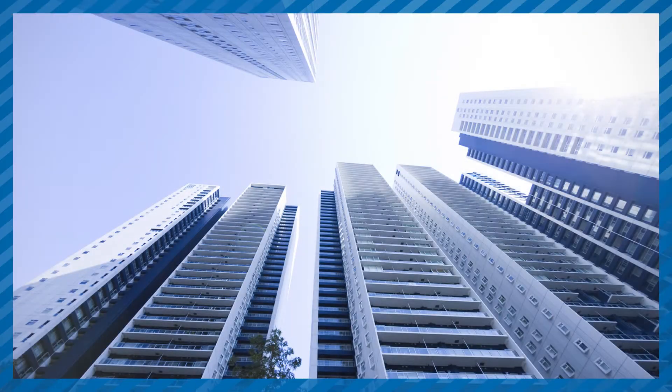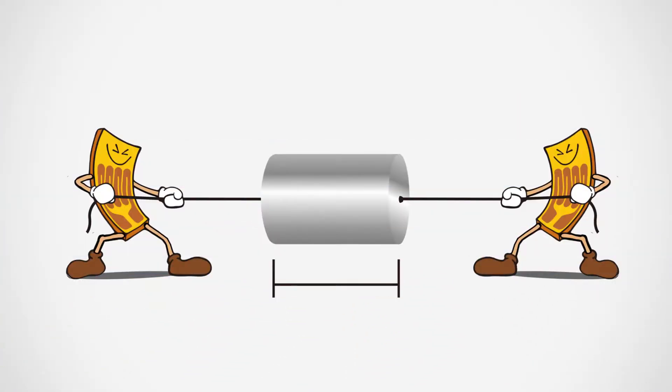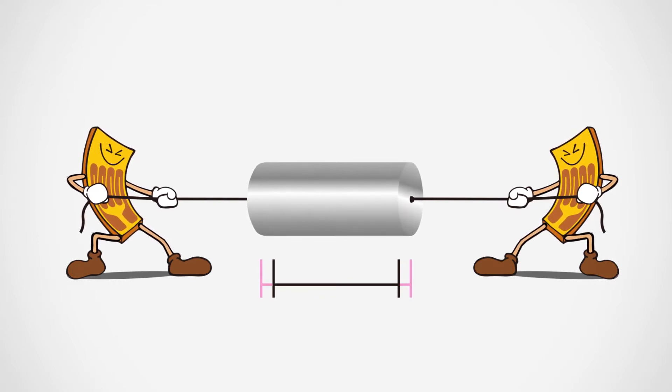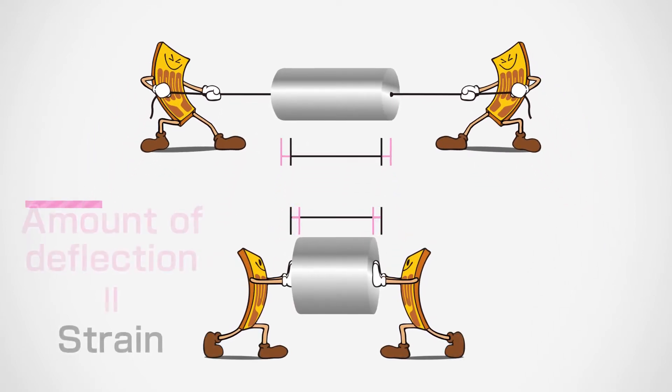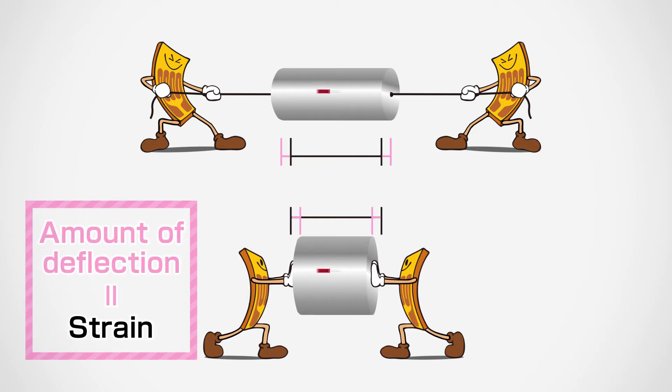When a pulling force is applied, materials used in buildings increase in length in the direction of that force. The deformation of this material as it increases and decreases in length is called strain.